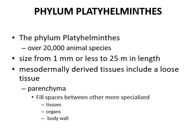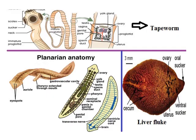Parenchyma fills the space between other more specialized tissues, organs, and body walls. In the phylum Platyhelminthes diagram, the tapeworm has a special head-like structure called the scolex. The scolex has suckers that extract fluid from the intestine of the host body.